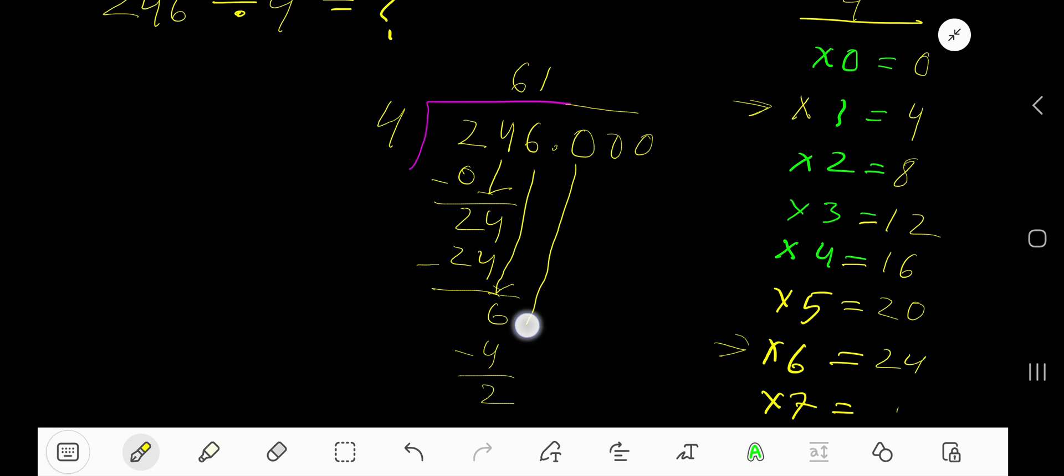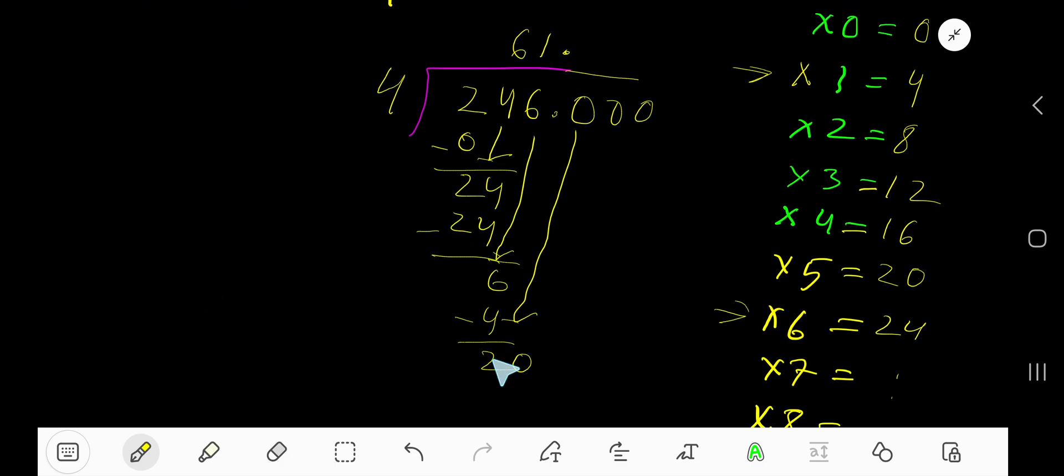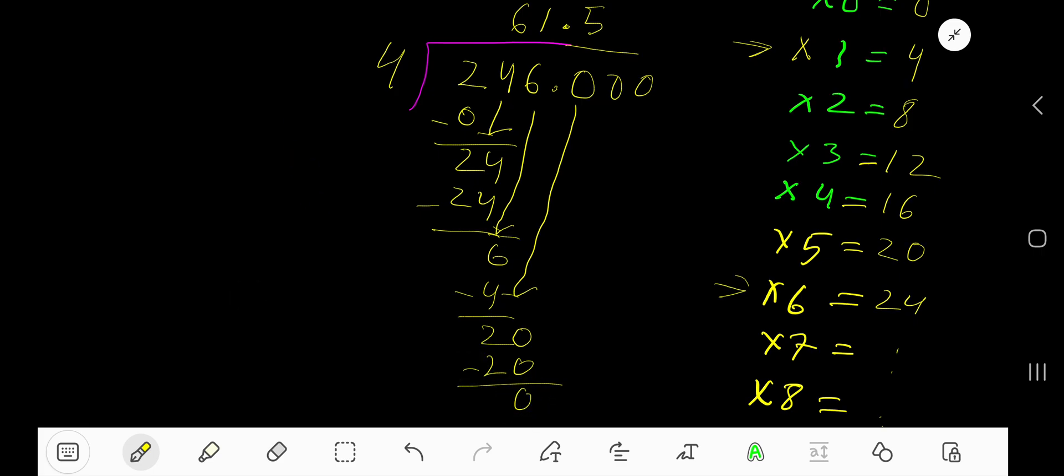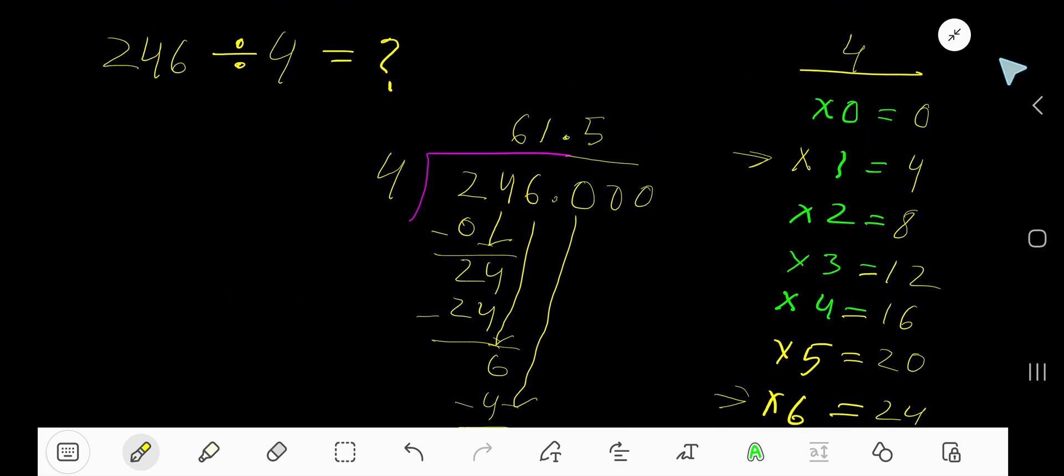Bring down the first zero. Before the zero, there is a decimal point. The decimal must come to the quotient directly. 4 goes into 20 how many times? 5 times. Write 5. 5 times 4 is 20. Subtract, you're getting 0. So your answer is 61.5.